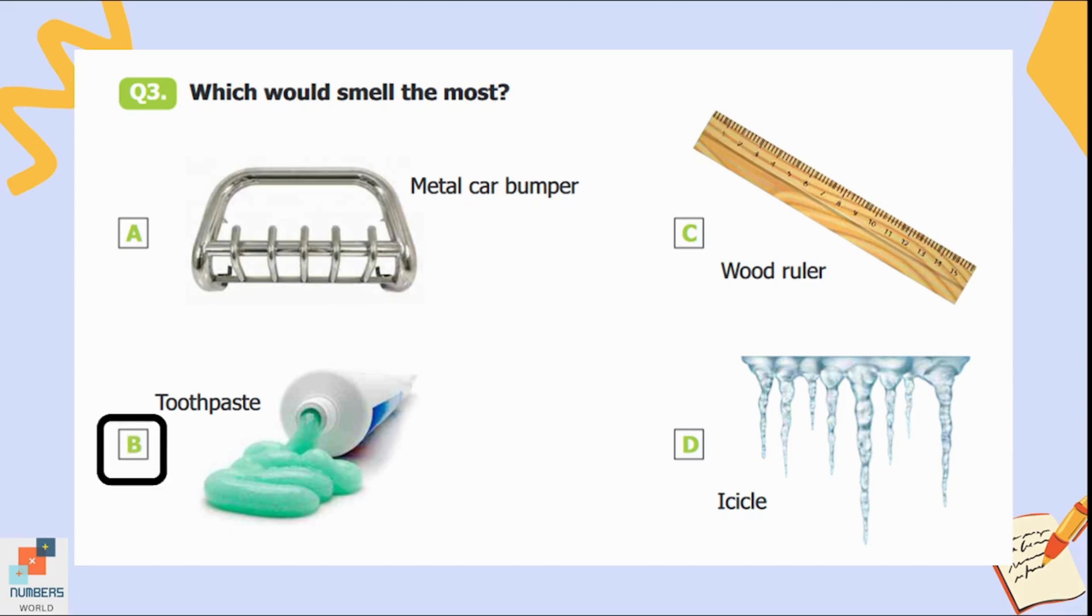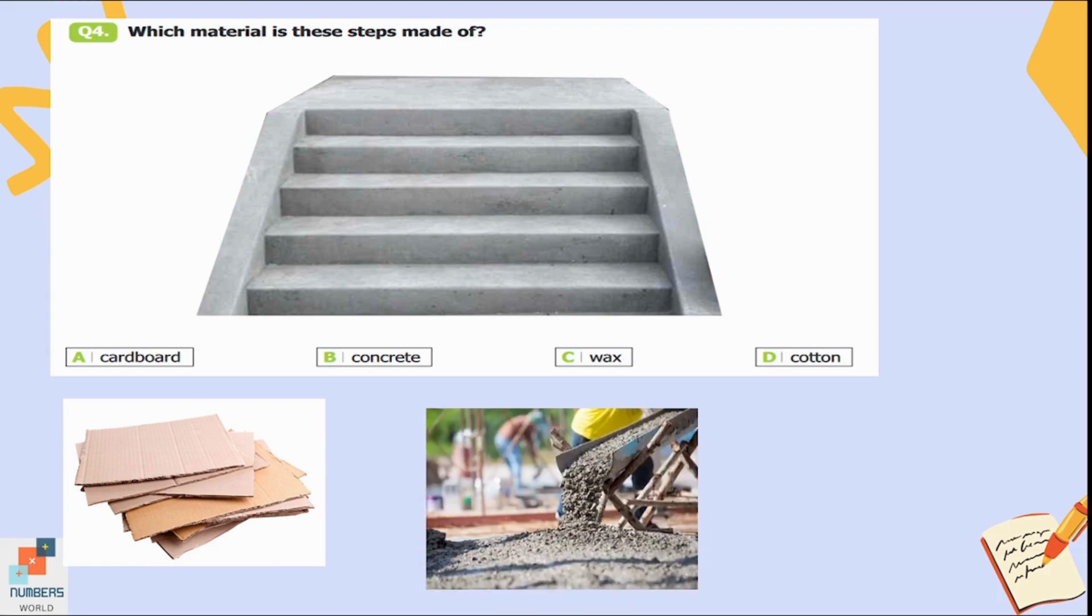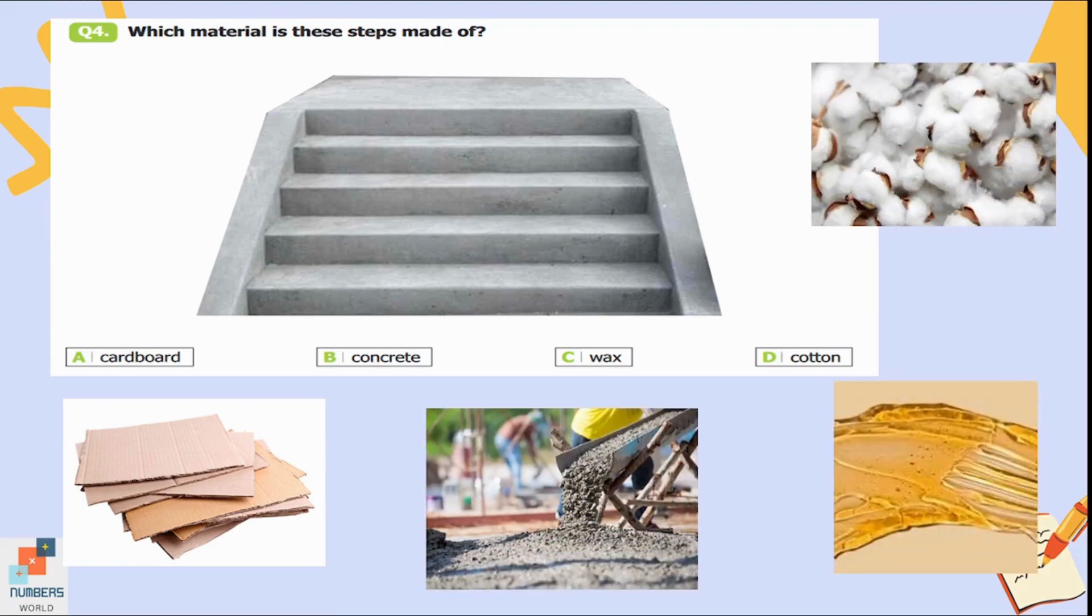Question number four: Which material are these steps made of? Option A is cardboard, B is concrete, C is wax, and D is cotton. Concrete is the correct option here. These steps are made of concrete.